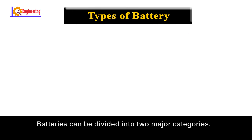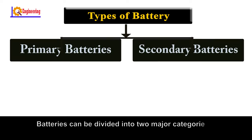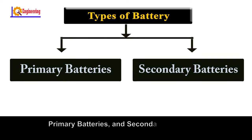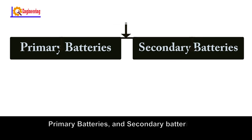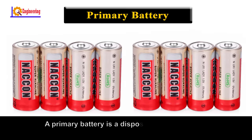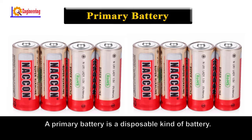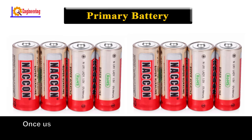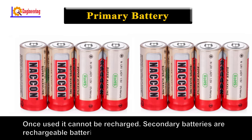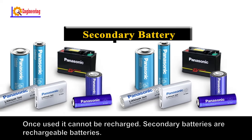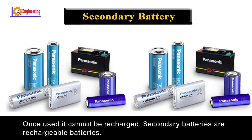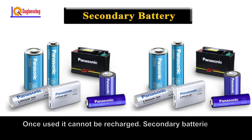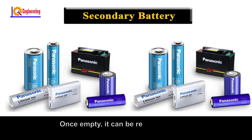Batteries can be divided into two major categories: primary batteries and secondary batteries. A primary battery is a disposable kind of battery — once used, it cannot be recharged. Secondary batteries are rechargeable batteries; once empty, they can be recharged again.